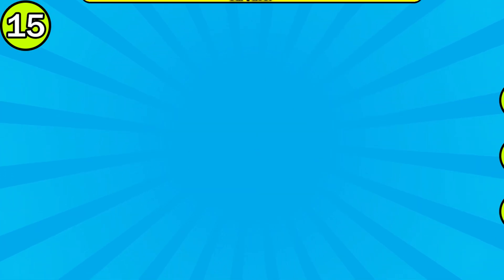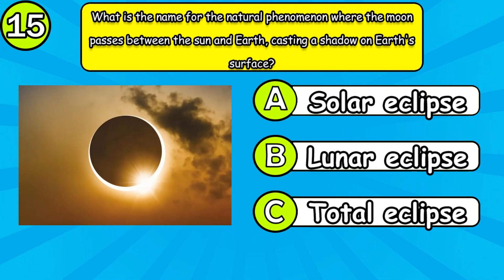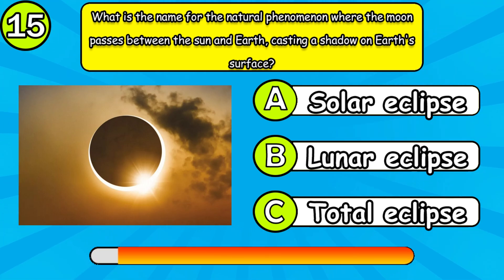What is the name for the natural phenomenon where the moon passes between the sun and earth, casting a shadow on earth's surface?